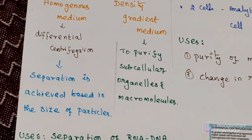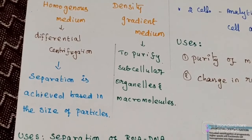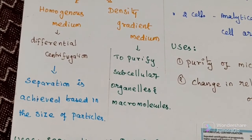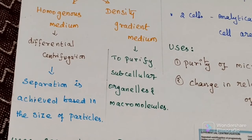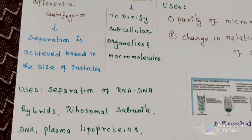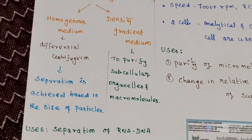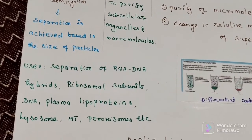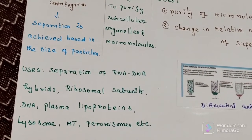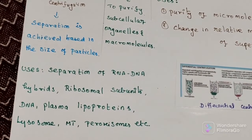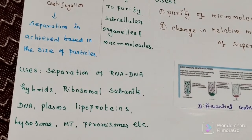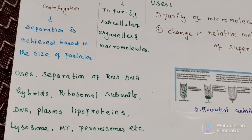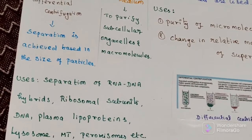Homogeneous separation is achieved based on the size of particles, while density gradient medium is used to purify subcellular organelles and macromolecules. These techniques are used for separation of RNA, DNA hybrids, ribosomal subunits, DNA, plasma lipoproteins, lysosomes, mitochondria, etc. So these are the separations performed using preparative centrifuge.